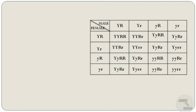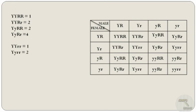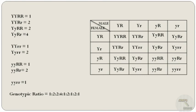With four gametes from each parent, we produce the F2 checkerboard. From this we get: 1 YYRR, 2 YYRr, 2 YyRR, 4 YyRr (yellow round); 1 YYrr, 2 Yyrr (yellow wrinkled); 1 yyRR, 2 yyRr (green round); and 1 yyrr (green wrinkled). The genotypic ratio is 1:2:2:4:1:2:1:2:1.